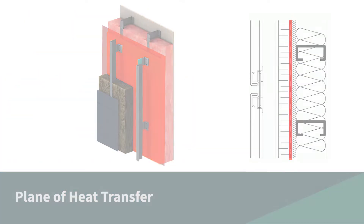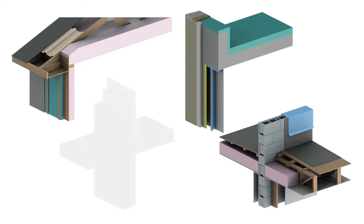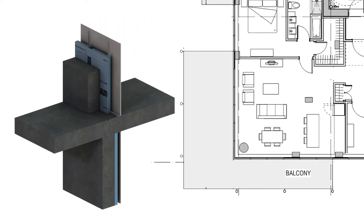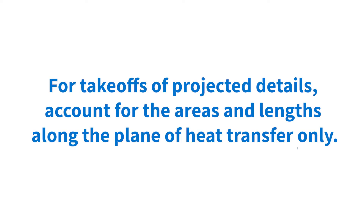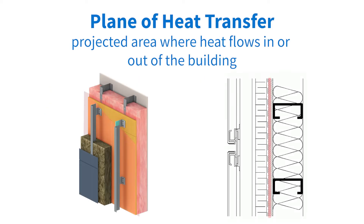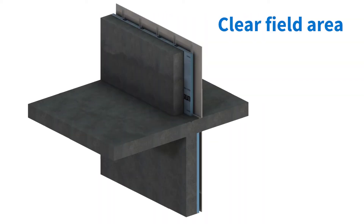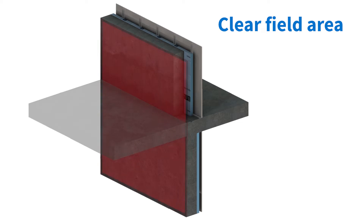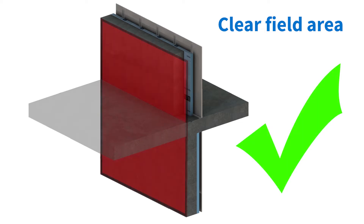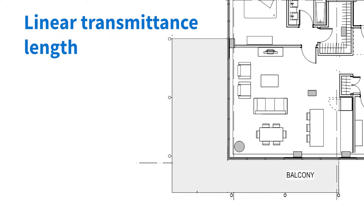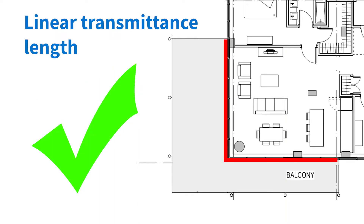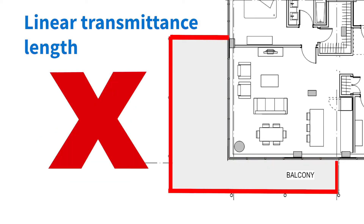Plane of Heat Transfer. Many types of details, such as balconies, project out from the envelope. For these types of details, we want to make sure we get the right takeoff values. For projected details, we want to only account for the area and lengths along the plane of heat transfer — this is the projected area across which the heat can flow in and out of the building. For a balcony detail, the clear-filled area over the balcony is just the projected area onto the envelope, not the entire surface area of the balcony. Similarly, for linear transmittance, it's just the length where the balcony meets the wall assembly, not the outside perimeter of the balcony.